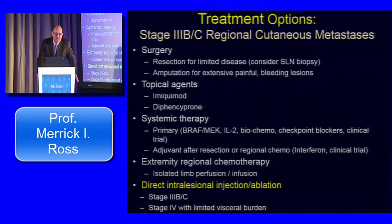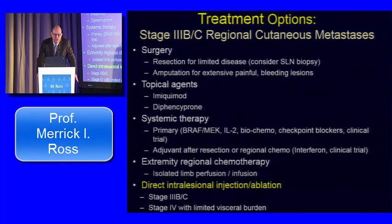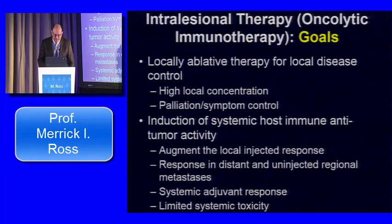Adjuvant therapy after resection, if resectable, or after regional chemotherapy like isolated limb perfusion — such as interferon or a clinical trial — is relevant. Extremity regional chemotherapy using isolated limb perfusion or isolated limb infusion has been the main stay for many of these patients. Response rates are high and toxicity is manageable, but responses are unfortunately not very durable and probably have very little impact at the systemic level. Intralesional injection or ablation has emerged as a very reasonable option, mostly for stage 3B and 3C but also for stage 4 patients with limited visceral tumor burden.